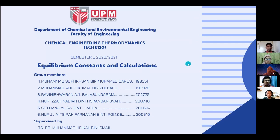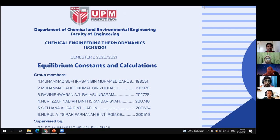My name is Mohamad Faizam bin Mohamad Darus, matrix number 193551. My name is Mohamad Alif Iqmal Buzikafri, matrix number 1678. My name is Noor Izzah Nadia Binti Iskandar Shah, matrix number 200748. My name is Sitihana Adisa Binti Haran, matrix number 200634. My name is Noorud Asira Farhana Binti Ramzi, matrix number 200519.